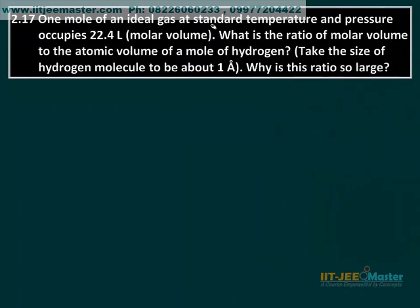One mole of an ideal gas at standard temperature and pressure occupies 22.4 liter molar volume. What is the ratio of molar volume to the atomic volume of a mole of hydrogen? Take the size of hydrogen molecule to be about 1 angstrom. Why is this ratio so large?